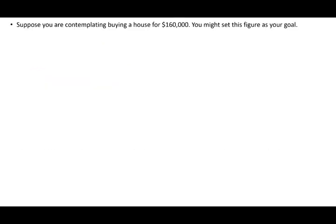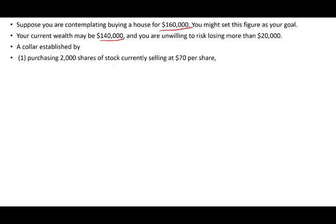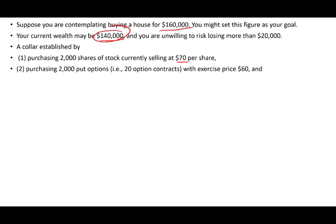Let's illustrate with an example. Assume you want $160,000 to buy a house. Your current wealth is $140,000, and you are unwilling to risk losing more than $20,000. You establish a collar by buying 2,000 shares at $70 of a certain company, investing your full $140,000. At the same time, you purchase 2,000 put options with an exercise price of $60.